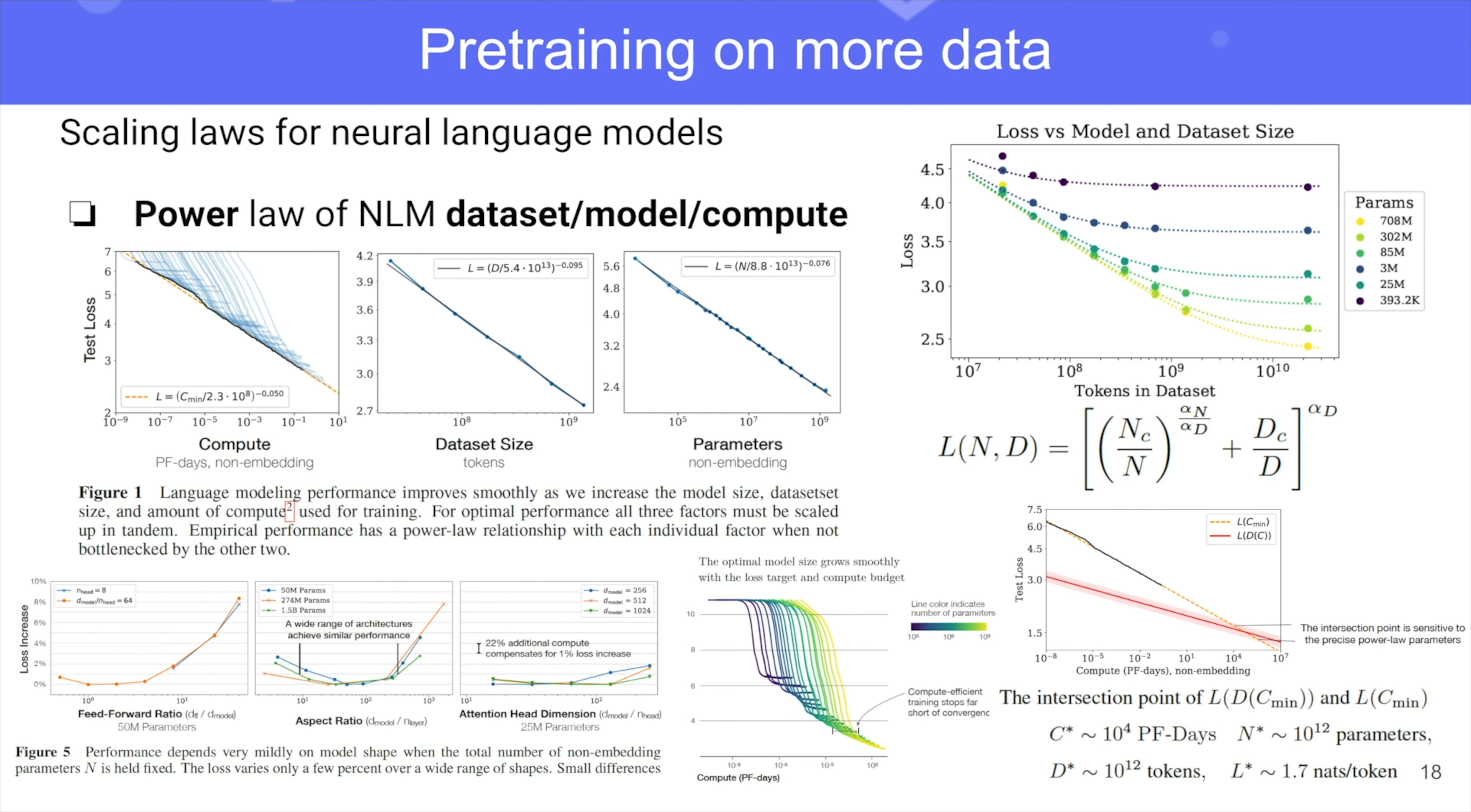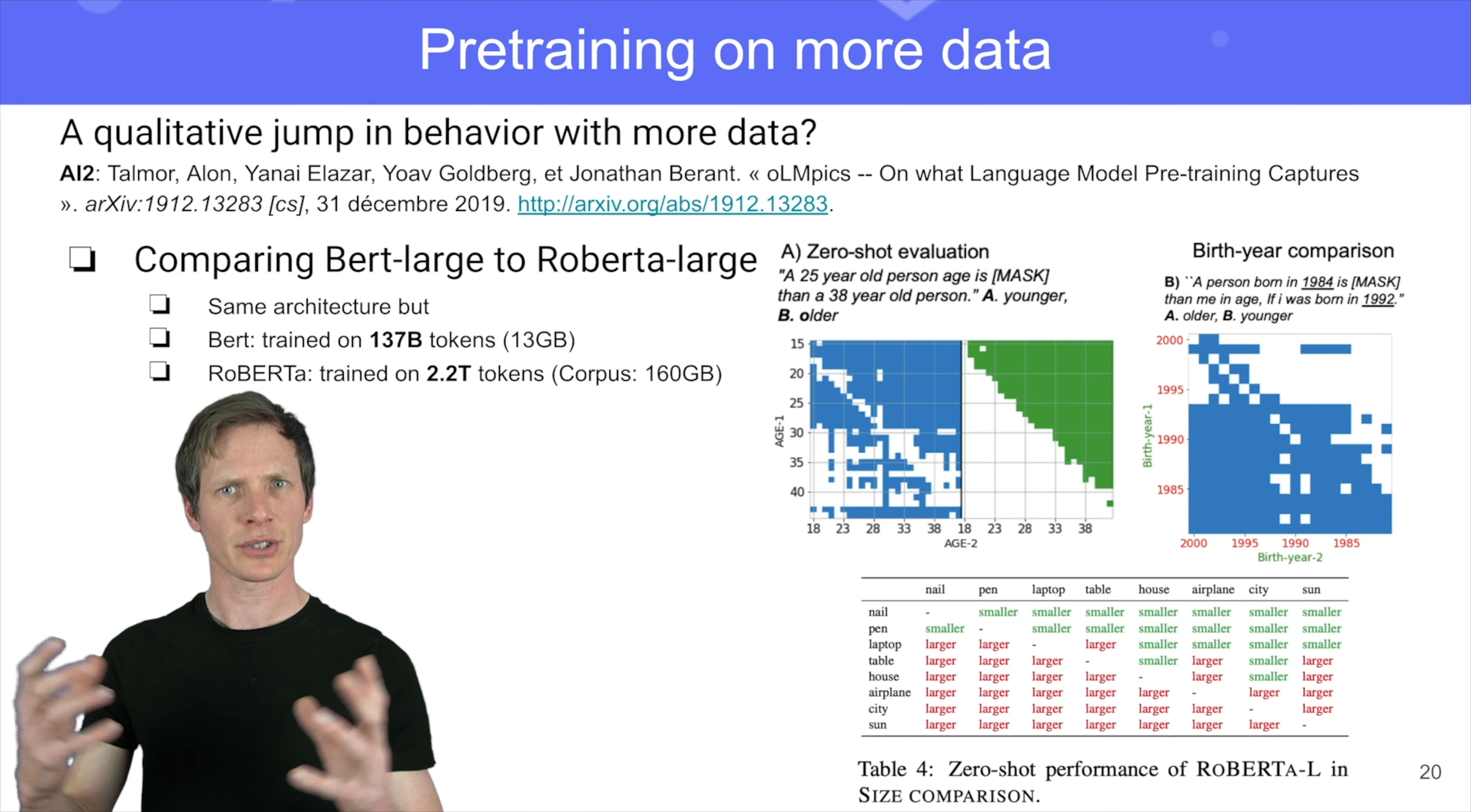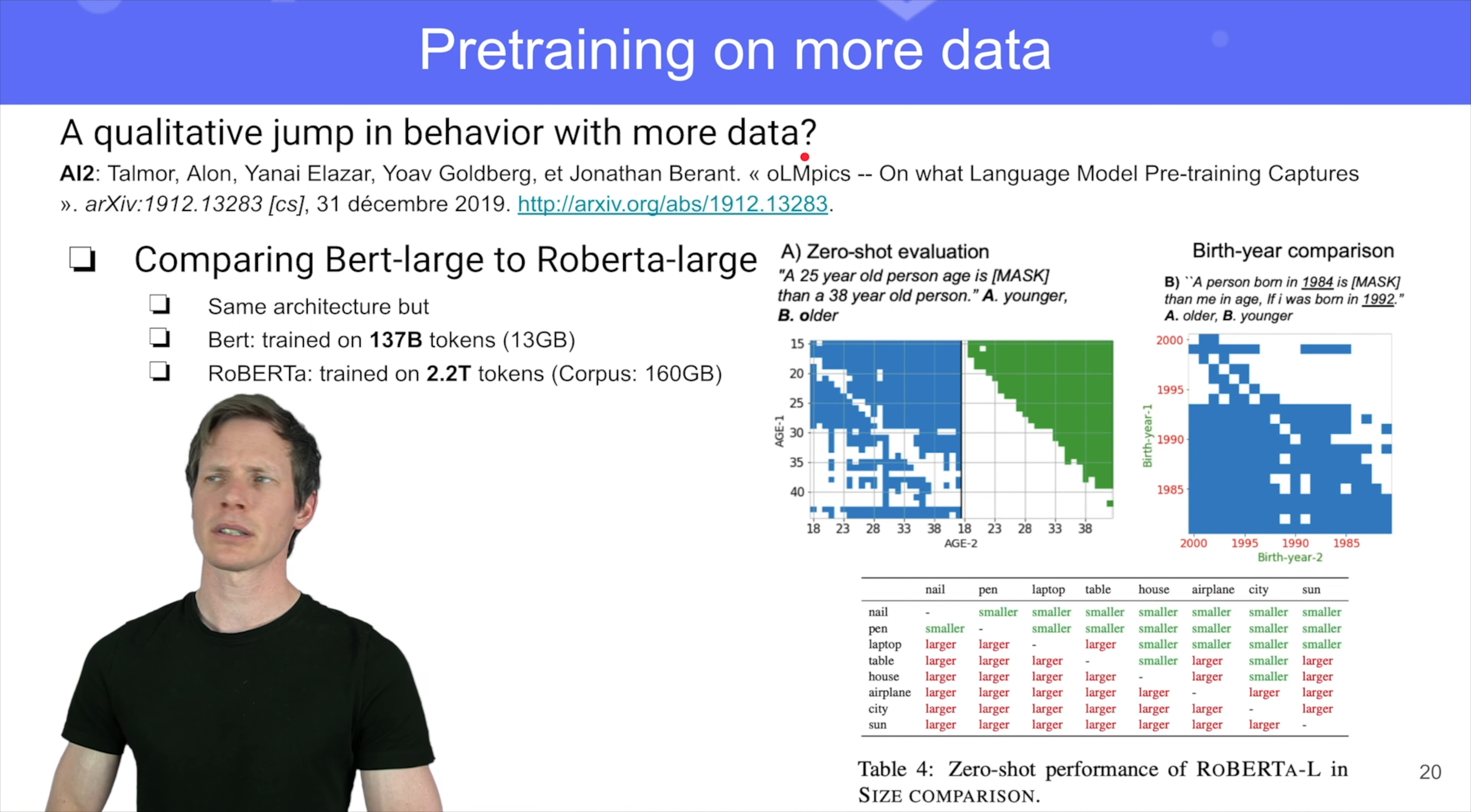So all this exploration of more data and bigger models are actually related to one idea. The idea is that maybe there will be a qualitative jump in behavior if we get enough data. The idea is like maybe just getting more data is enough to see a qualitative, like a phase transition in how the model behaves. And there is some hints of this. It's quite an interesting idea, I think. It's very controversial somehow because more data, as I was saying, more data or bigger models is really a research program, right?